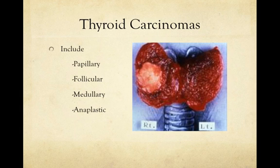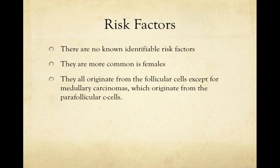I'm going to be talking about the pathology associated with anaplastic change in the thyroid tissue. According to research, there are no known or identifiable risk factors. We do know that thyroid carcinomas are more common in females, and the majority originate from the follicular cells, except for medullary carcinomas, which originate from the parafollicular C cells — the maker of calcitonin.